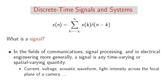Discrete time signals can be represented as a summation from k equals minus infinity to infinity of x of k, which represents our discrete time signals, multiplied by a delta function which is shifted by k.